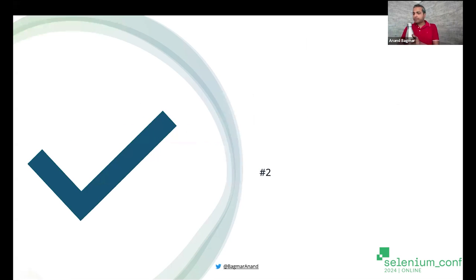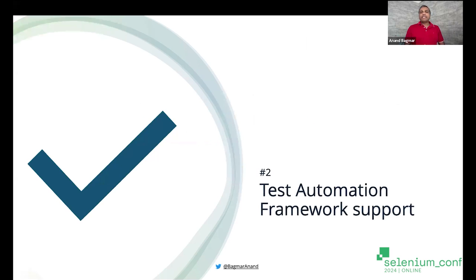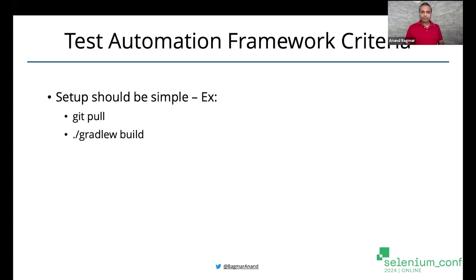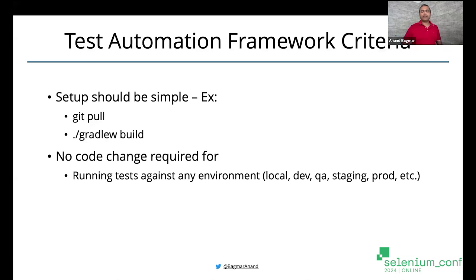The next solution, which is very important for any test automation framework, is how easy it is to implement and run your tests across various different types of applications or platforms your application supports. The criteria I always keep in mind is: the setup should be extremely simple — git clone or git pull to get the latest code, and one command like Gradle build or Maven setup should automatically set up whatever is required. You don't need any manual configuration to run the test.